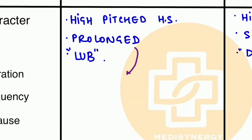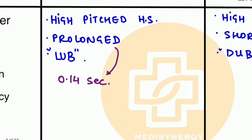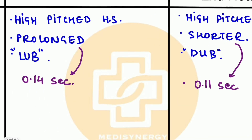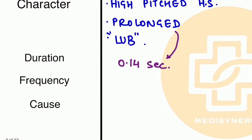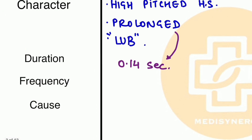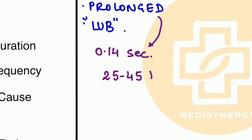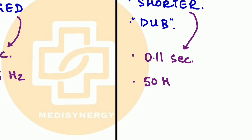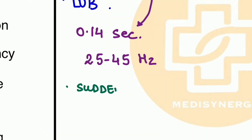The duration of the first heart sound is prolonged at 0.14 seconds, and the duration of the second heart sound is 0.11 seconds. However, the frequency of the first heart sound is less than that of the second heart sound. The frequency of the first heart sound is 25 to 45 hertz, while the frequency of the second heart sound is 50 hertz.